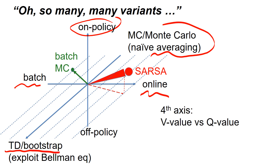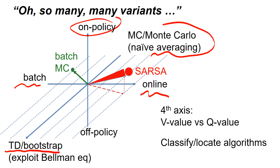The SARSA algorithm is on-policy, online, and uses the bootstrap TD method, which means it exploits the Bellman equation. So we have three axes. There's also a fourth axis: we can distinguish whether an algorithm uses V-values or Q-values or maybe even both. In these four dimensions, we can classify and locate algorithms — it could be mini-batch, or a mix between on-policy and off-policy. It's really a four-dimensional space, and all these algorithms solve Markov decision problems, trying to maximize the total return.